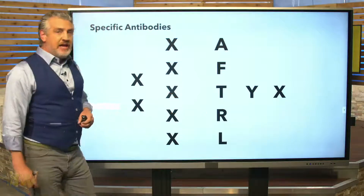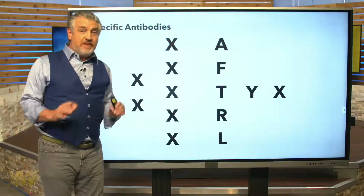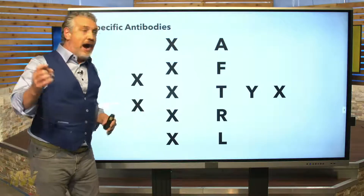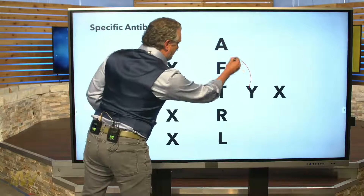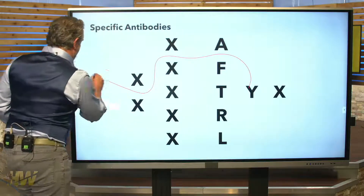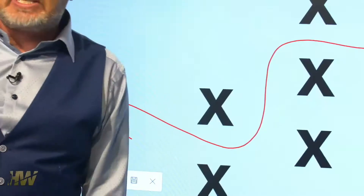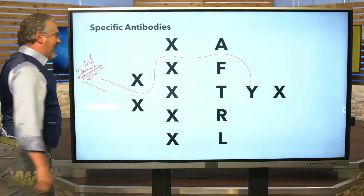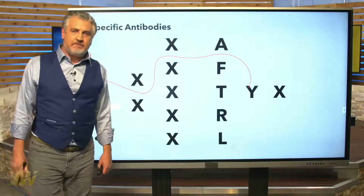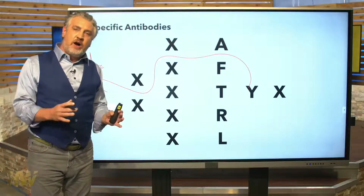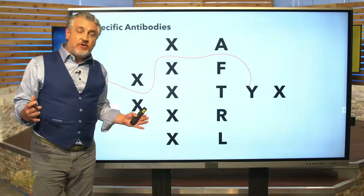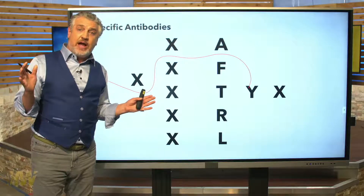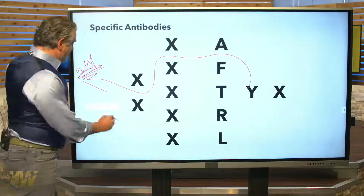So what happens if Y gets the ball? The coach said it was going to be X — it doesn't matter. Y gets the ball, Y comes around, boom, goes through, can go anywhere they want. The vaccine-specific antibodies do nothing. Virus wins the whole game because no one on the team was prepared for Y. In fact, they were told don't go near Y.